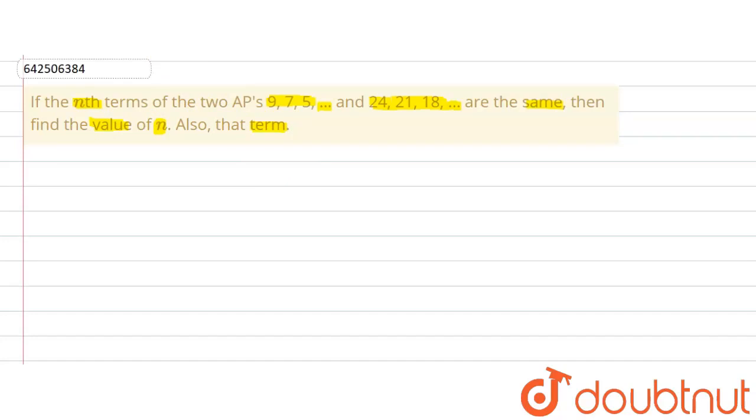Now, as the question says the nth terms are the same, we know the formula for the nth term of an AP is a + (n-1) × d, where a is the first term and d is the common difference.